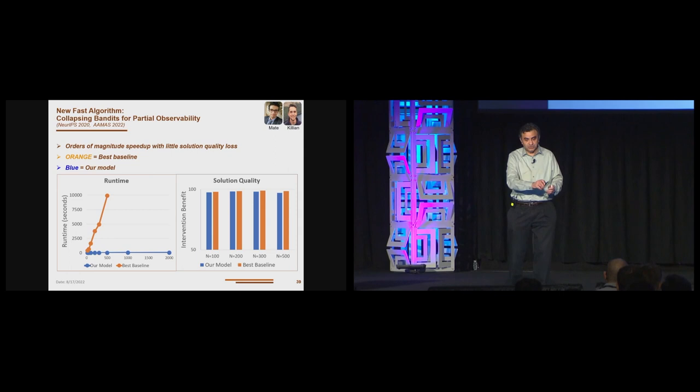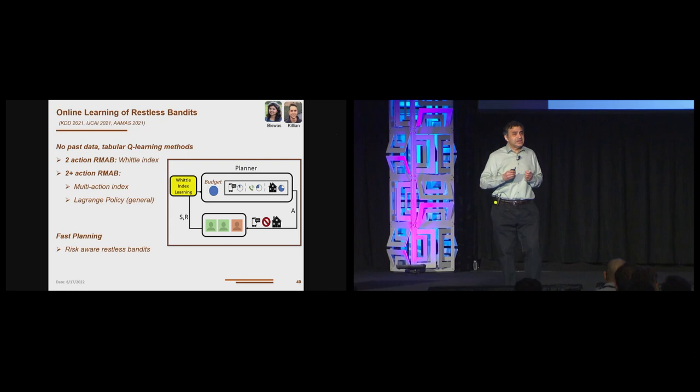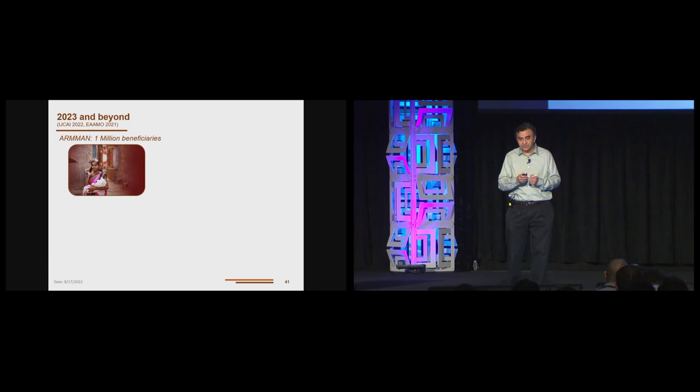So we've done simulations on this model using data that we obtained from Mumbai. And again, we can show here that the orange, which is the best baseline, can be beaten by our model significantly in terms of runtime, giving up very little in terms of solution quality. There are many other exciting problems to think about. In KDD 21, we talked about online learning. Online learning, whether there's two actions or two plus actions. So where are we going with all of this? 2023, we hope to get to 1 million beneficiaries with Arman.